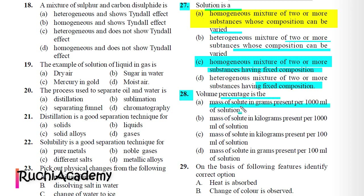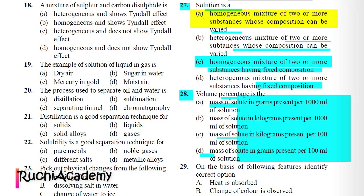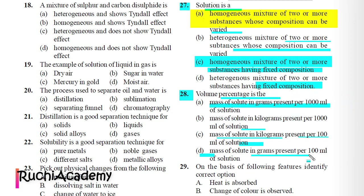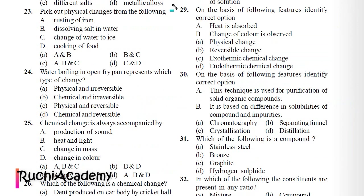Question 28: Volume percentage is: A) Mass of solute in grams present per 1000 ml of solution, B) Mass of solute in kilograms present per 1000 ml of solution, C) Mass of solute in kilograms present per 100 ml of solution, D) Mass of solute in grams present per 100 ml of solution. Correct answer is D — mass of solute in grams present per 100 ml of solution.